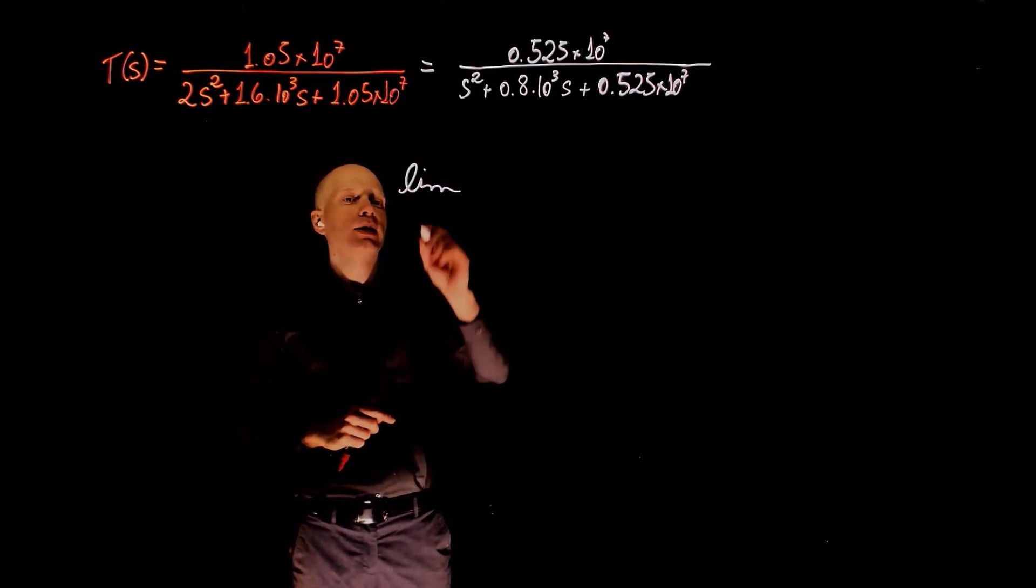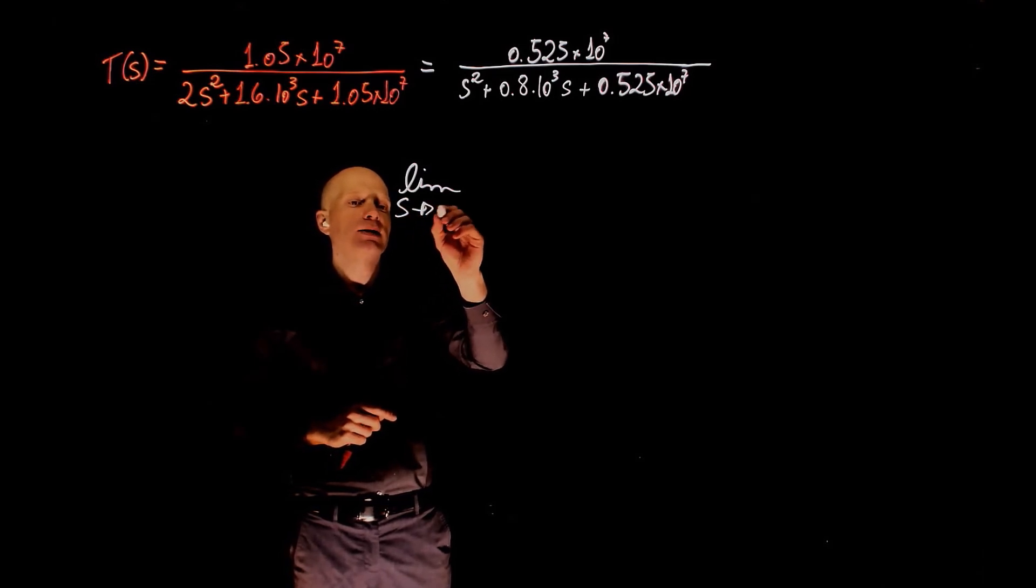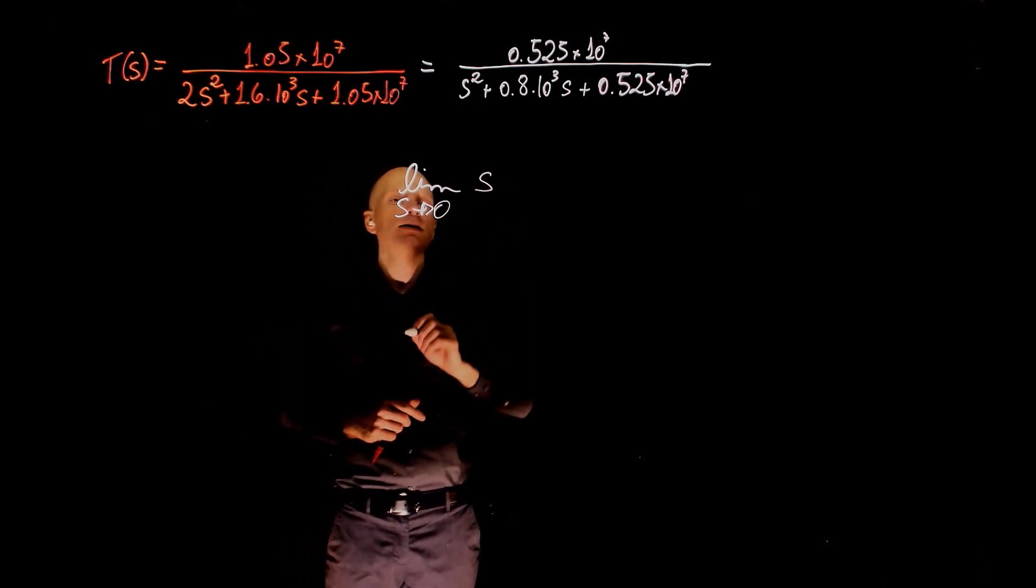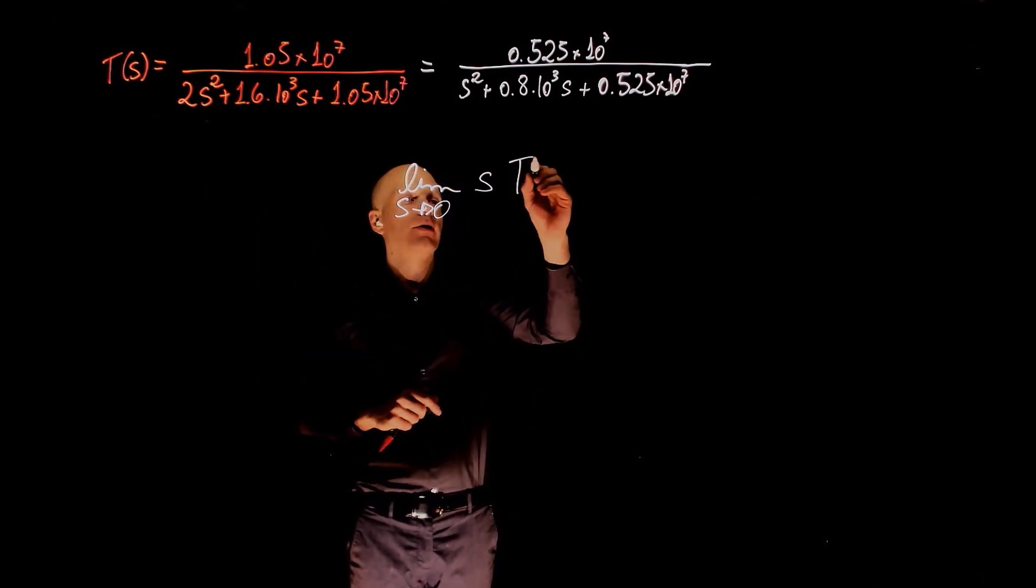From the final value theorem, we know that the final value is the limit when s tends to 0 of s times the function, that is T of s.